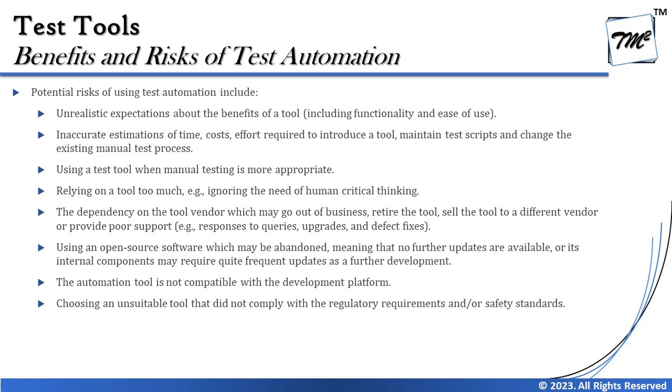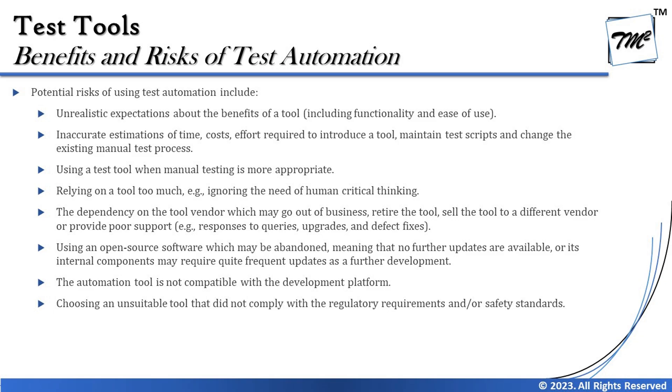Also, the automation tool may not be compatible with development platforms. For example, you buy tool X knowing you are testing a Java-based application, and then X does not support Java. You must always do a POC — proof of concept — to check that the tool you are looking to adopt works with your technology and your platform. Even operating systems can be a factor: for example, your tool works on Windows 10, but your company migrates to Windows 11 and the vendor says the tool doesn't support Windows 11. The technology, language, and base platform where you'll install the tool all come into play.